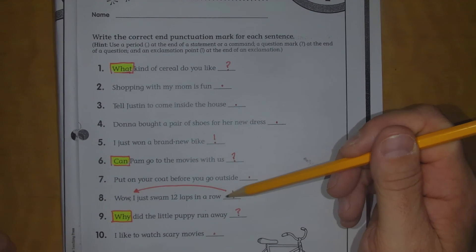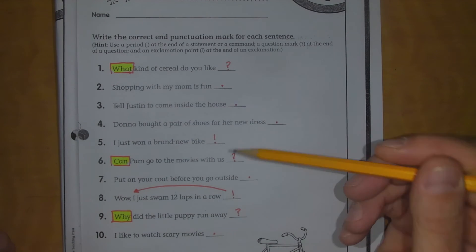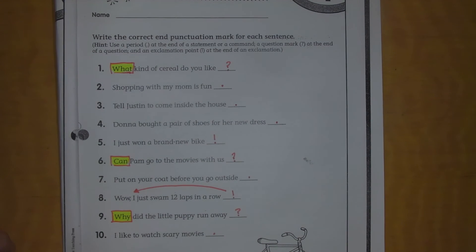Wow, I just swam 12 laps in a row. I put an exclamation point on that one also because they have that wow. That's an indicator that someone's excited there. So that would be an exclamation.